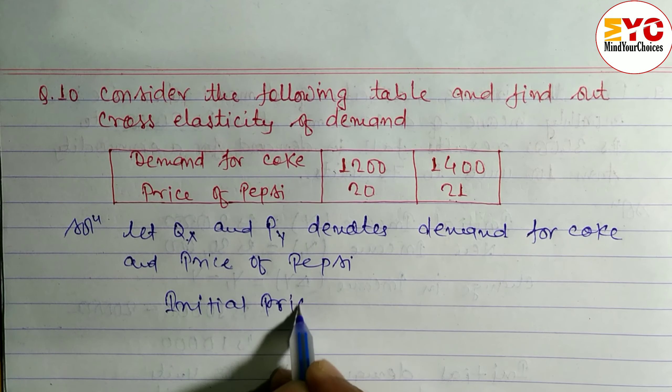So we write the initial price of Pepsi: Py is equal to 20 rupees. And the new price of Pepsi, Py1, is equal to 21 rupees.